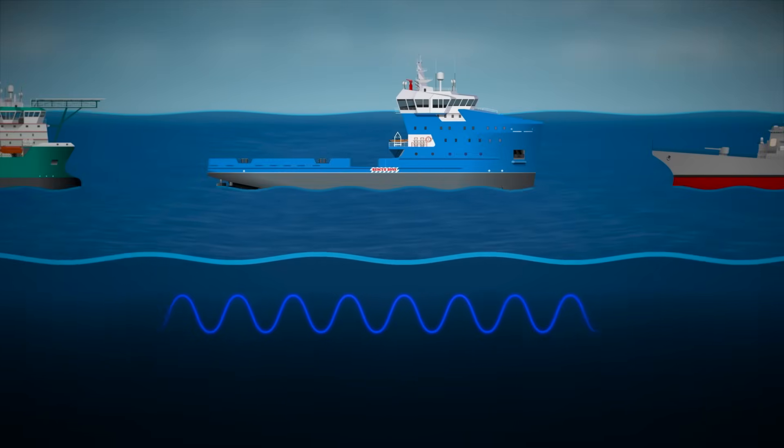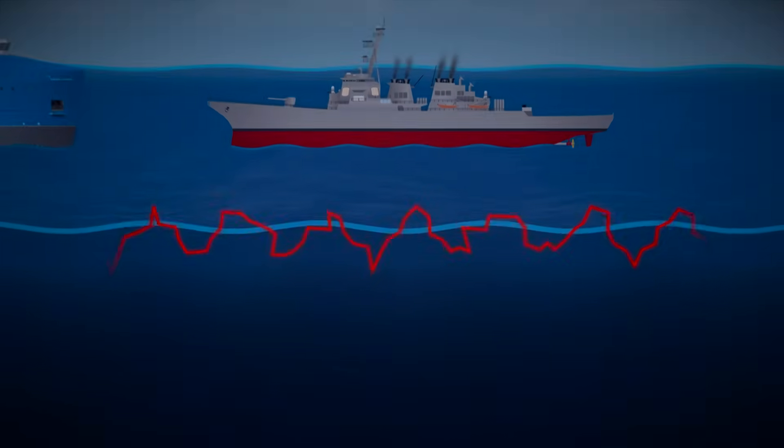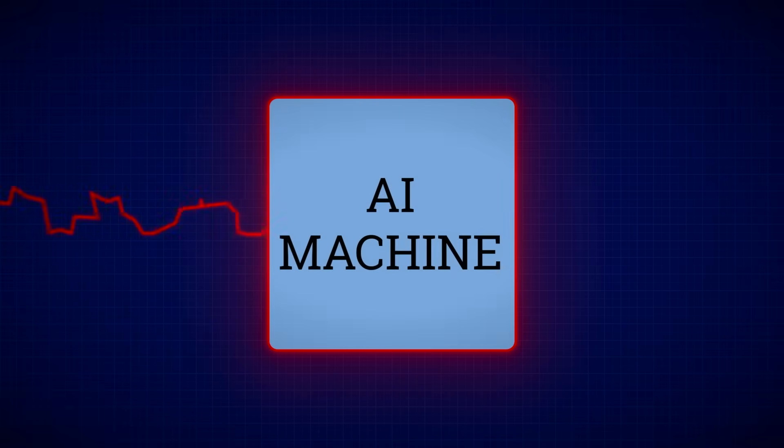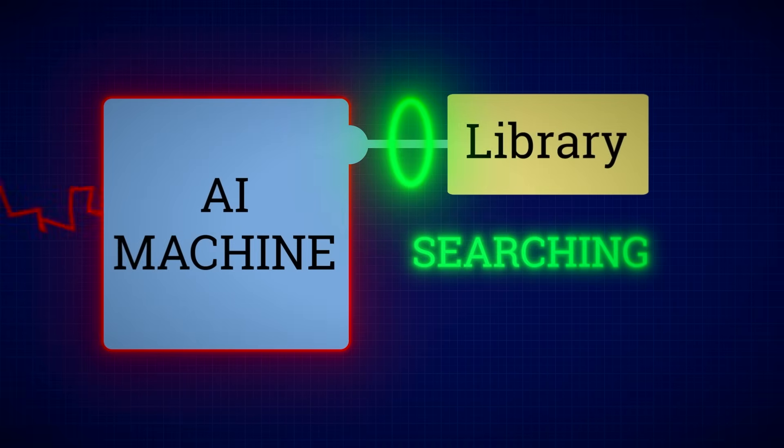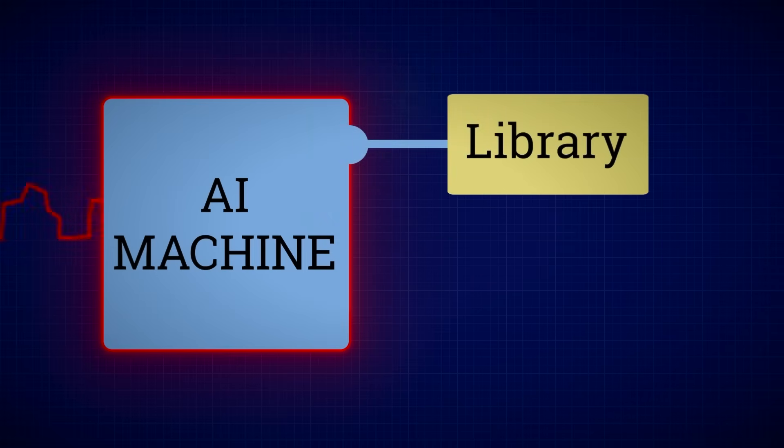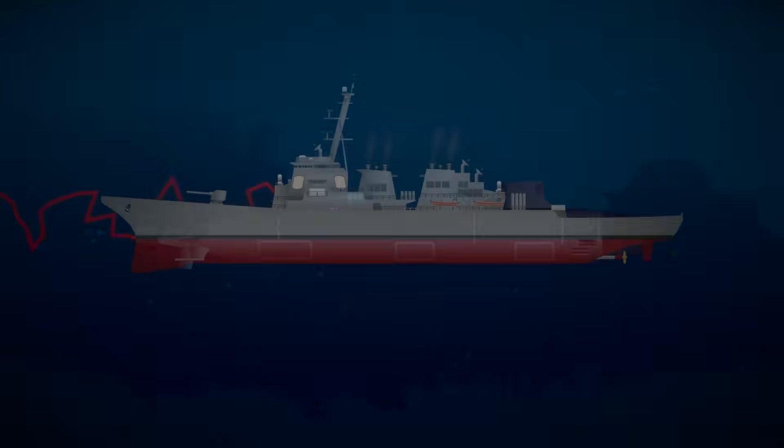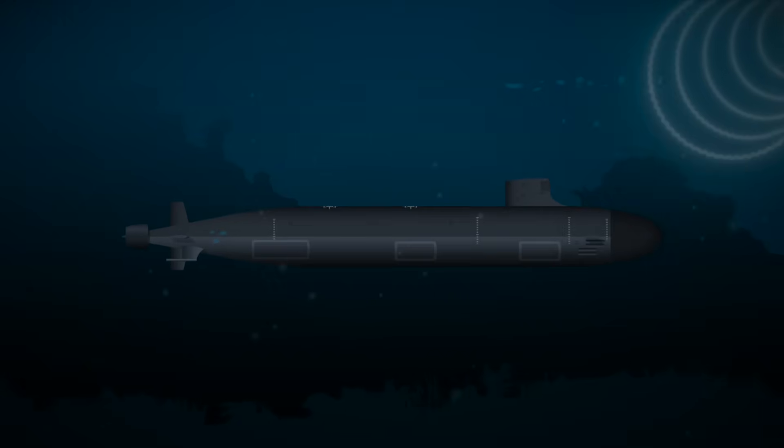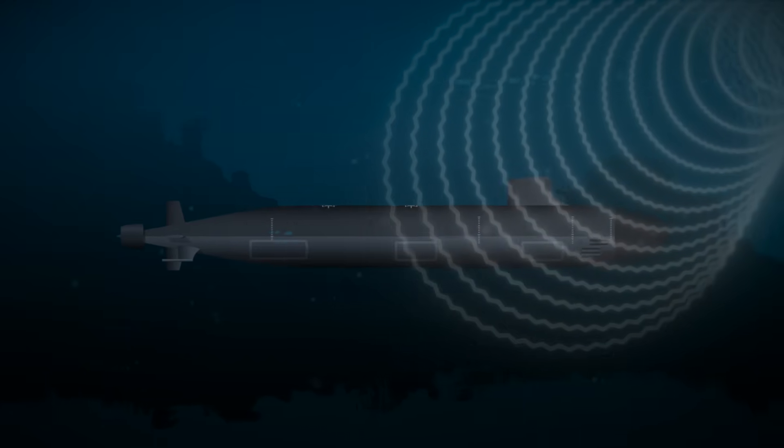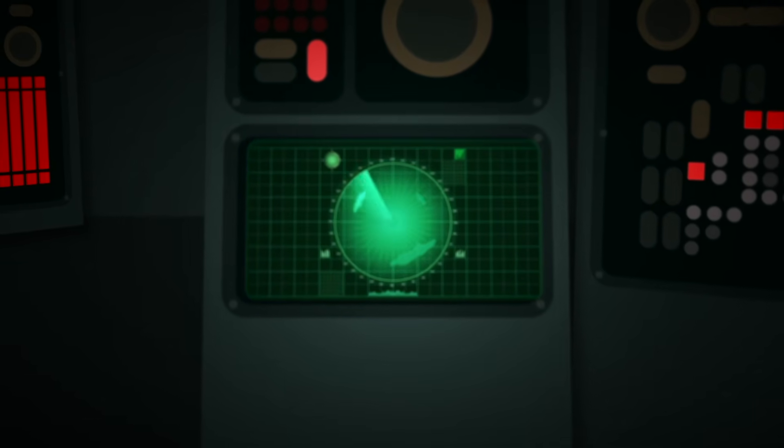Modern navies keep secret libraries of sounds made by different ships. When a passive sonar system picks up a sound, it doesn't just alert the crew. It compares that sound to stored patterns. Machine learning algorithms can even help refine the match, identifying the likely class, propulsion type, and sometimes even the specific vessel. So in the deep ocean, where you can't see a thing, it's often the sound of a ship that gives it away. Not just to human ears, but to a trained machine listening silently in the dark.